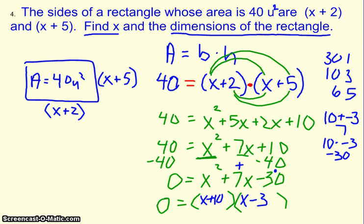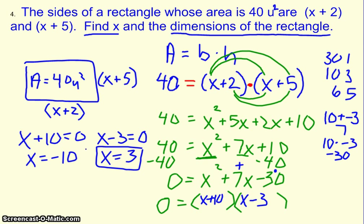So when I set both of these things equal to 0, x plus 10 equals 0, and x minus 3 equals 0, I end up with x equals negative 10 and x equals positive 3 for my answers.